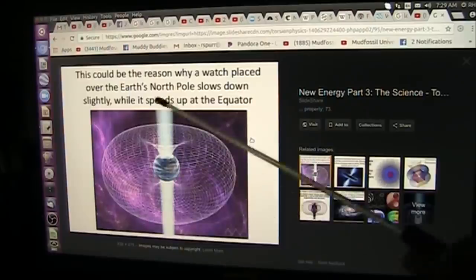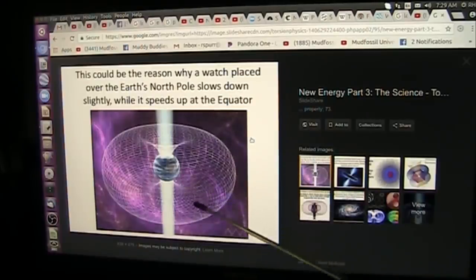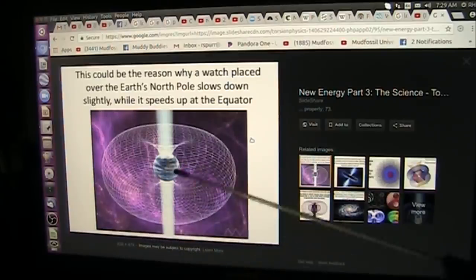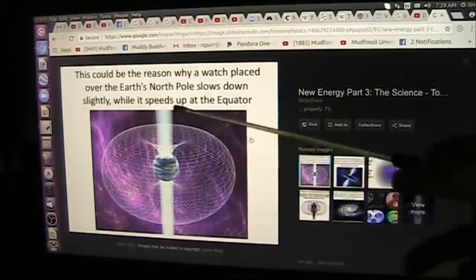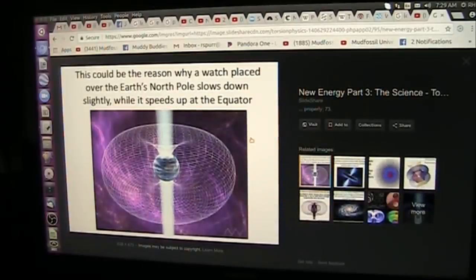Well, it's the magnetic fields that are set up around polarized bodies. Now, the Earth is a polarized body. It's a positive and negative pole, and it creates a field around it. So what does that mean to us?